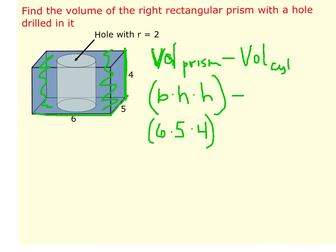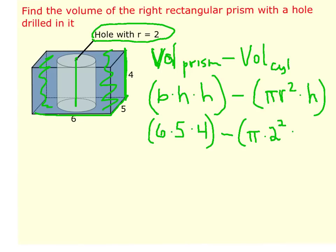And then the volume of the cylinder is going to be πr², because that's the area of the base, times the height of the cylinder. Well, if I look at the picture, it tells me up here that the hole has a radius of 2. So π times 2². And the height of the cylinder is the distance from the top to the bottom, which is exactly the same as the height of this prism. So it is a height of 4.